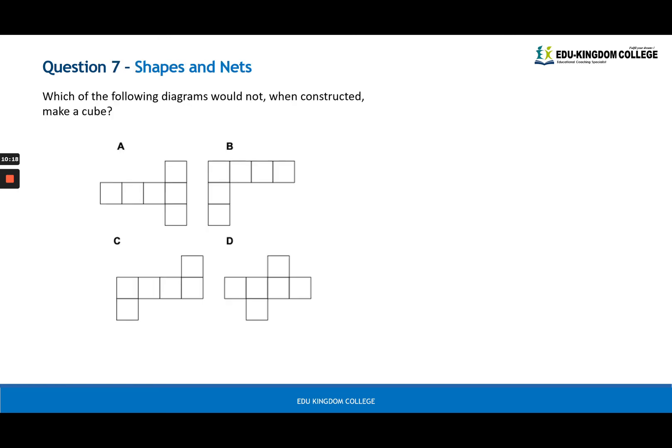Which one would not construct a cube? The answer is B. And the reason being, if you think about a cube, you can think about it as an empty four sided shape. And there's two lids, one on the top and one on the bottom. You need these two lids on either side of this long strip to close the box. However, B does not have that. It cannot close up like a box or a cube. Therefore, B is the answer.